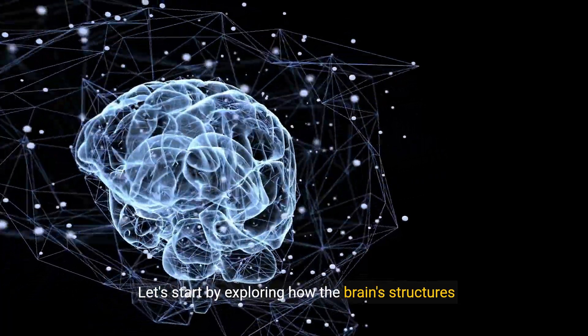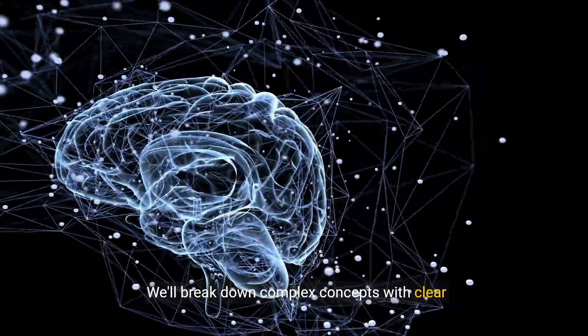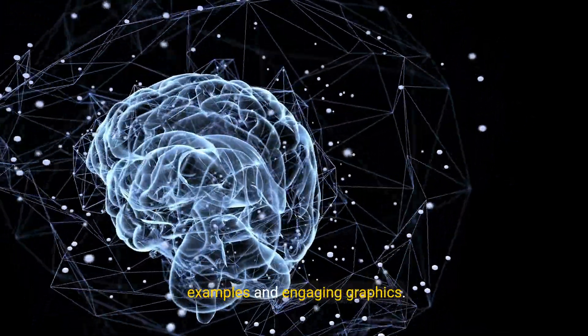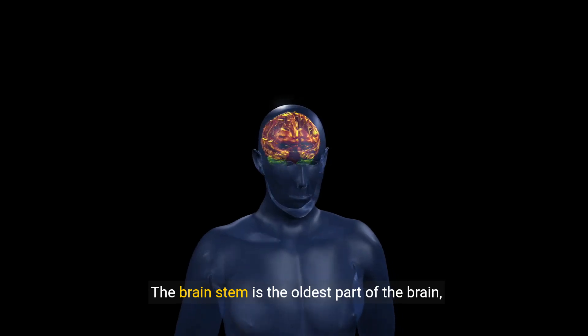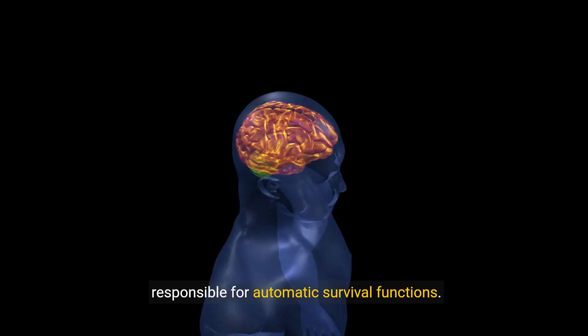Let's start by exploring how the brain's structures apply to behavior and mental processes. We'll break down complex concepts with clear examples and engaging graphics. The brain stem is the oldest part of the brain, responsible for automatic survival functions.